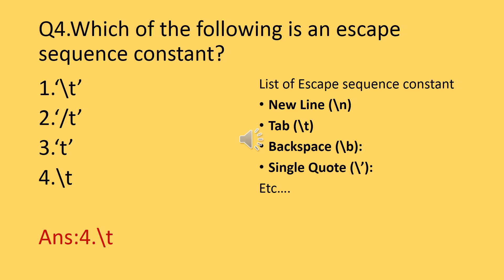Question number four: which of the following is an escape sequence constant? The answer is '\t' (backslash T). For the output of a C++ program, escape sequence constants are used. An escape sequence constant is also called a control character constant. It can be more than one character and always starts with a backward slash followed by a character. So the answer is \t.